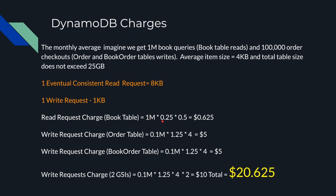For reading from the book table: 1 million read requests at $0.25 per million items. Each read unit covers up to 8 KB (eventual consistent read), and our item size is 4 KB, so we multiply by 0.5 — giving $0.625. If you are reading items larger than 8 KB, you'd need to apply a corresponding multiplier. That covers reading from the book table.